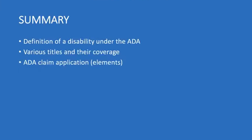Really quick summary here on our unit on the ADA. I want you to take a couple of things from this unit in particular. I want you to understand the definition of a disability under the ADA and what it implies for KNR organizations. I want you to be aware of the various titles and who has to comply under those titles, primarily the first three we looked at today. And I want you to be aware of the ADA claim application — what are the elements that have to be proven by a plaintiff in order to be successful in an ADA claim.